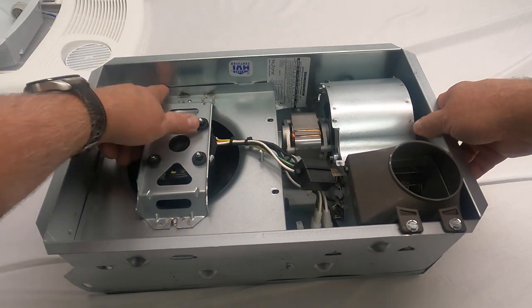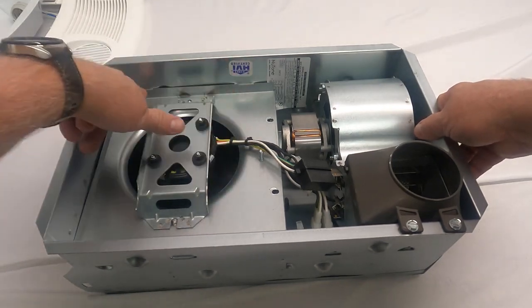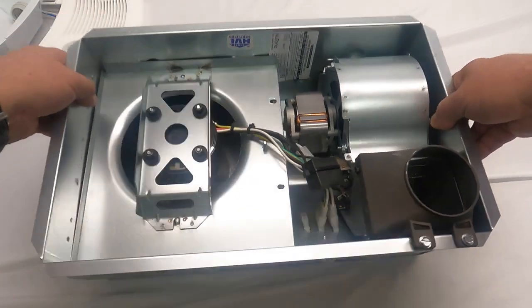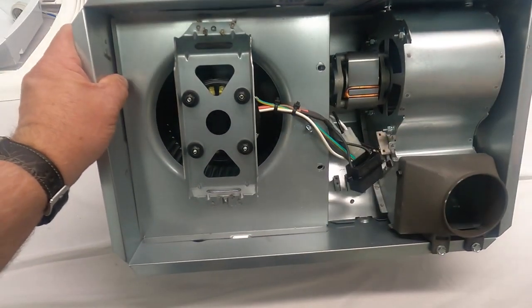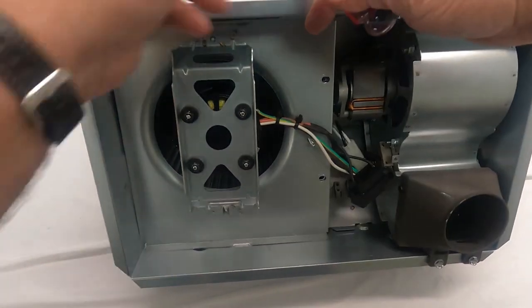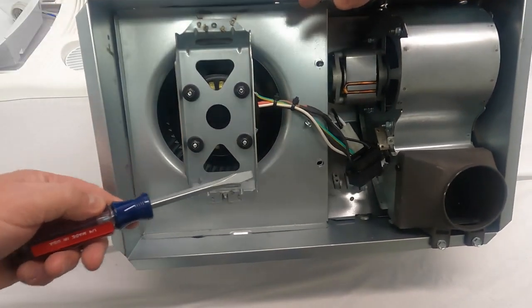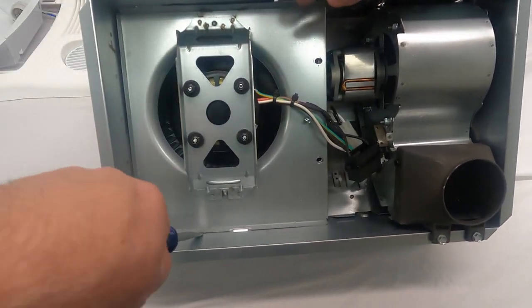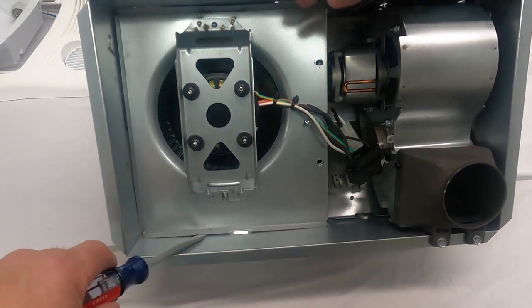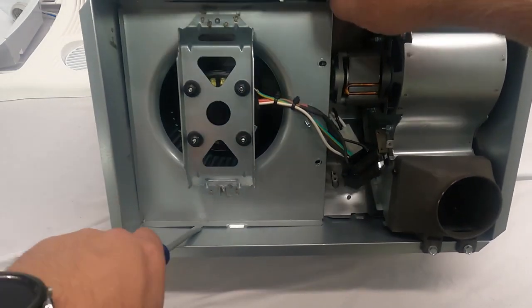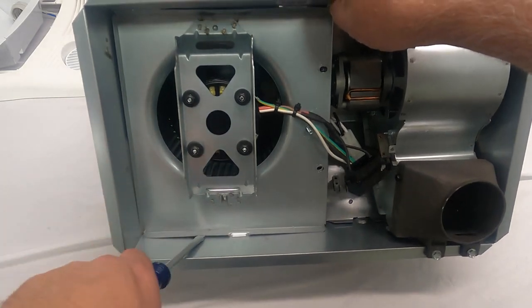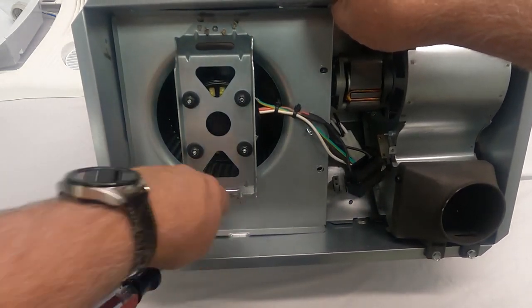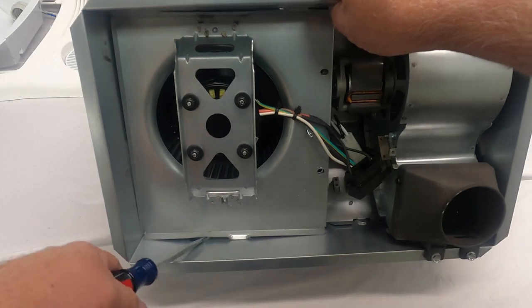Once those two screws are removed, if you take a look at the housing, there's two tabs on one side and a single tab on the opposite side. You're going to take this regular screwdriver and slide it between the housing and that plate like so. You're going to turn the handle of the screwdriver and it's going to unsnap this tab like so. So I'm going to lay this back down.